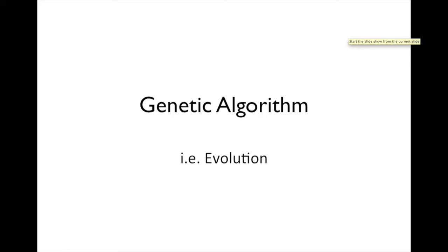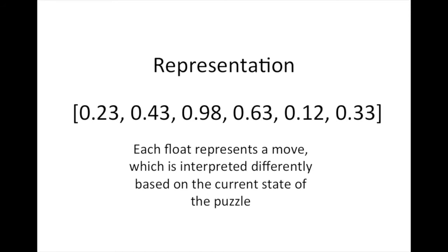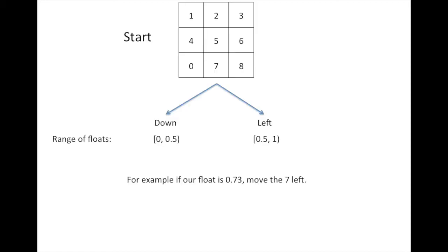So first things first, in order to implement genetic algorithms, we need to understand what they are. Genetic algorithms are basically evolution for algorithms, where solution spaces mutate and cross with each other to generate new solution spaces. For representation, we represent each solution space as a list of floats, where each float represents a move interpreted differently based on the current state of the puzzle. For example, if we're given this puzzle state, then the valid moves — there are only two — are down and left, represented by a range of floats between 0 and 0.5, and 0.5 and 1. So if our float is 0.73, we move the 7 to the left.